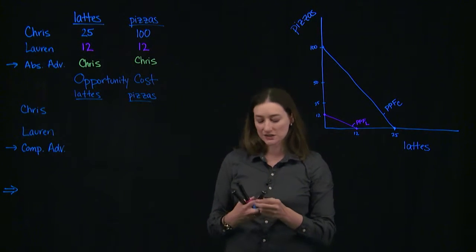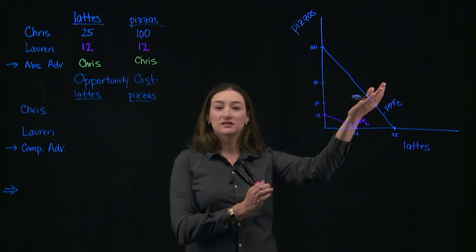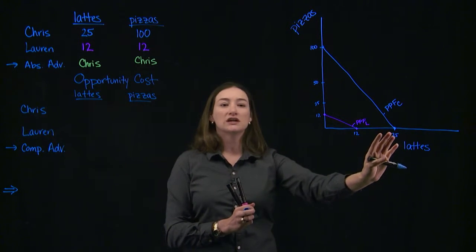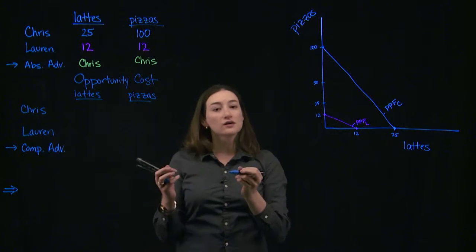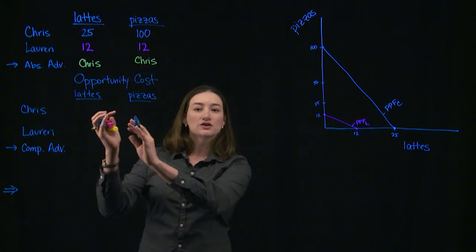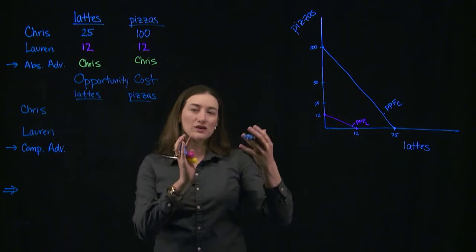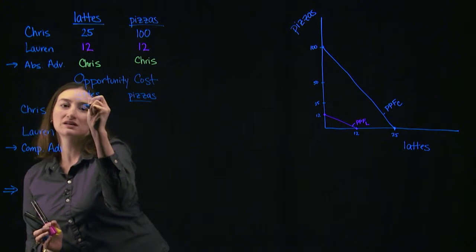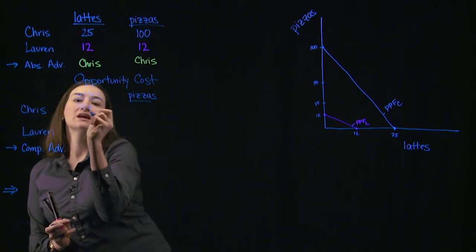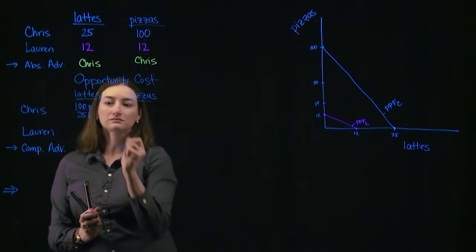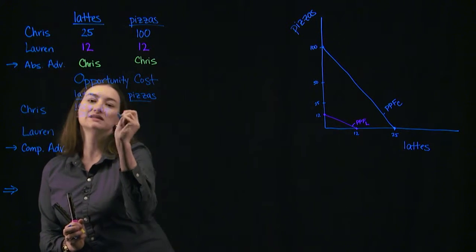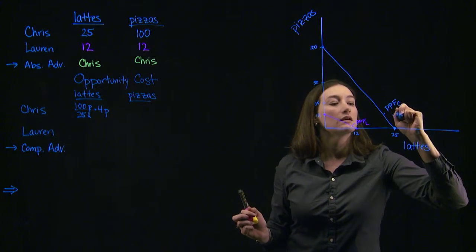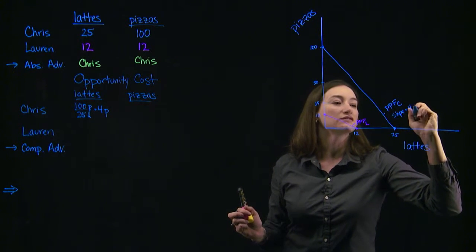The way we see comparative advantage is to think about opportunity cost. Your opportunity cost is reflected in the slope of the production possibilities frontier. So the slope of the PPF gives me the opportunity cost of producing the good on the x-axis. How much does it cost Chris to produce one latte? It has to be a number with pizza as the units, calculated by taking 100 pizzas divided by 25 lattes. That gives me 4 pizzas per latte — the cost of one latte is 4 pizzas. That's also the slope of his production possibilities frontier.